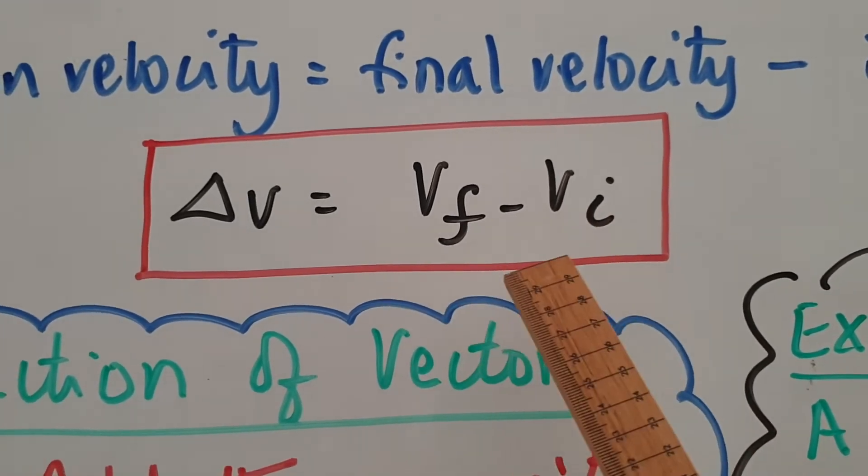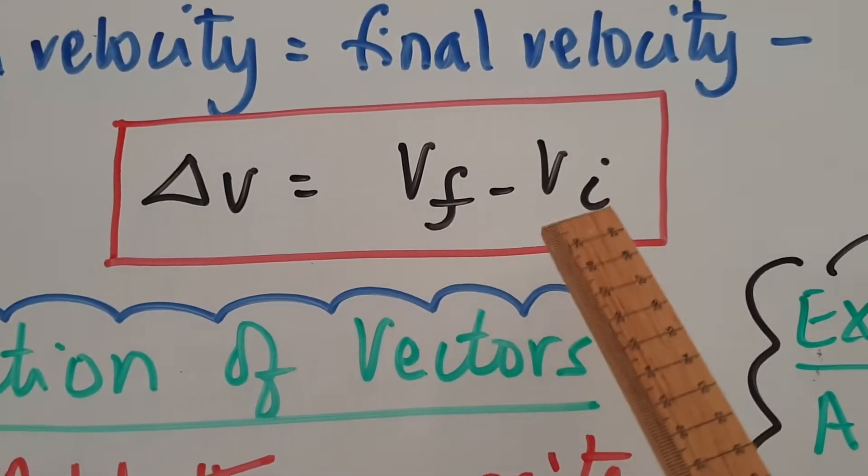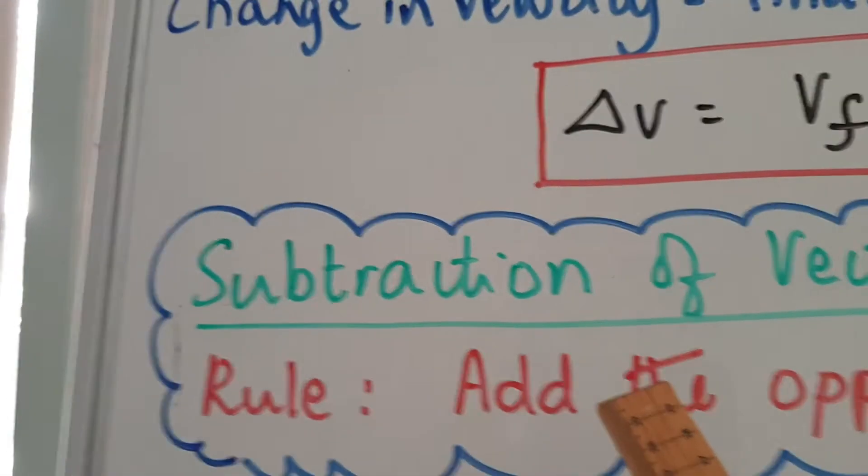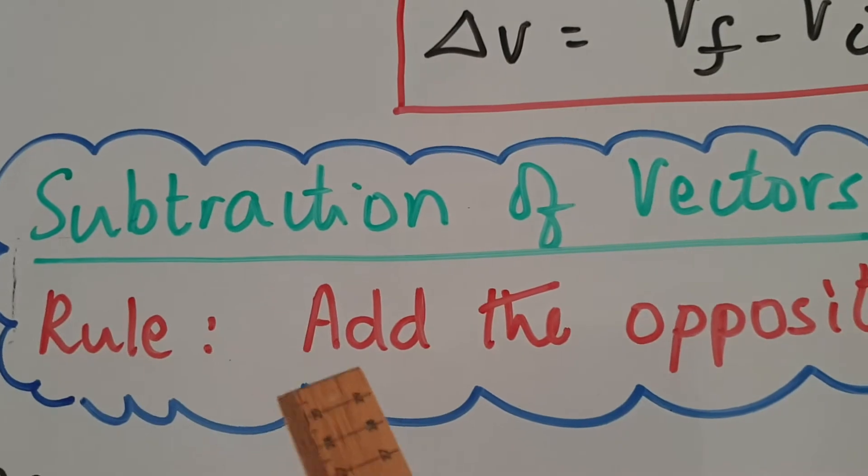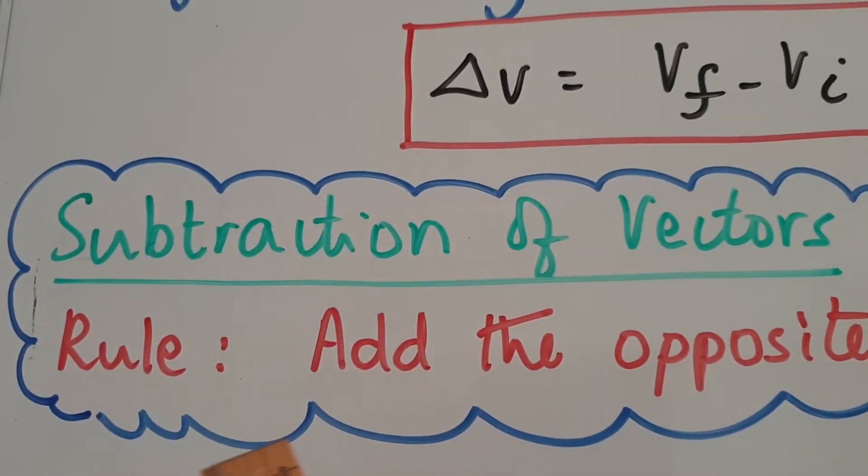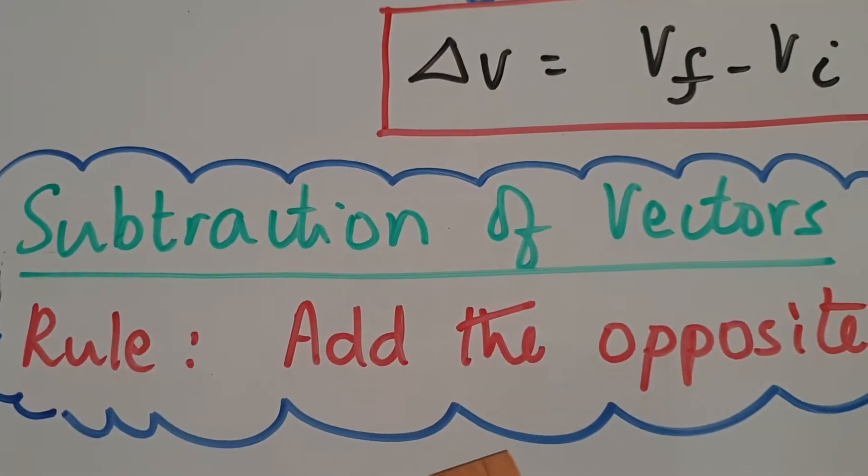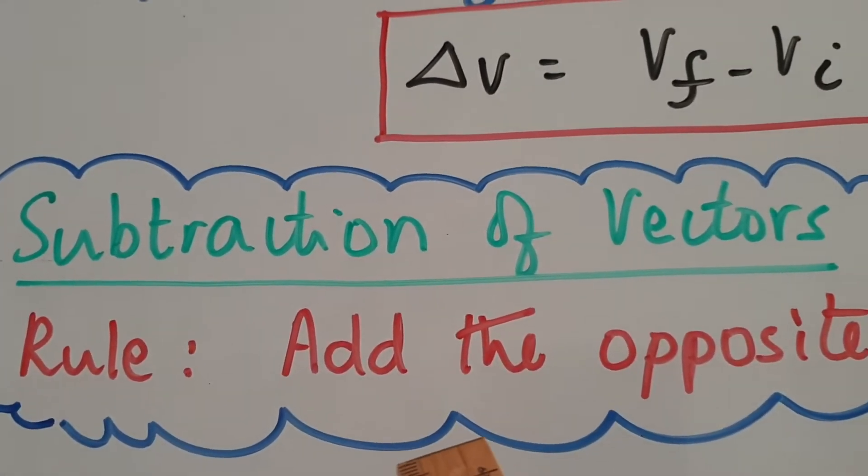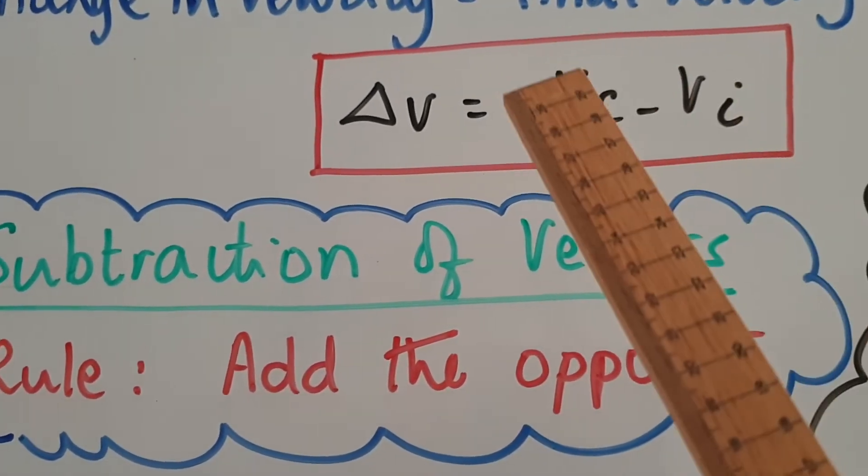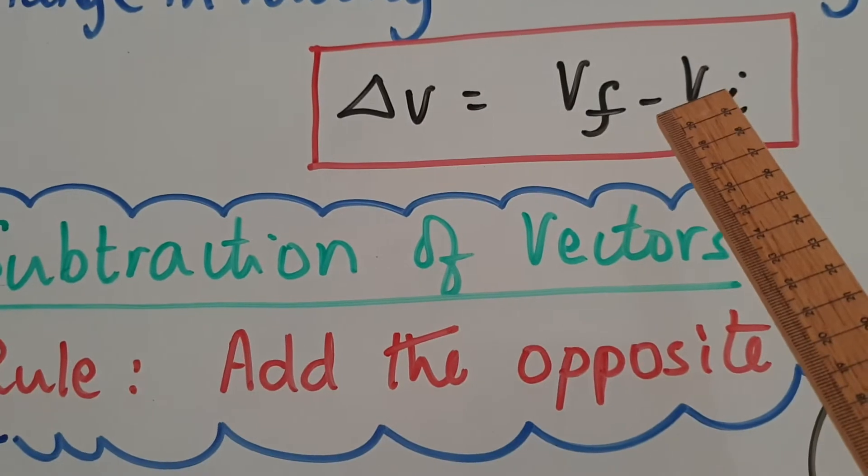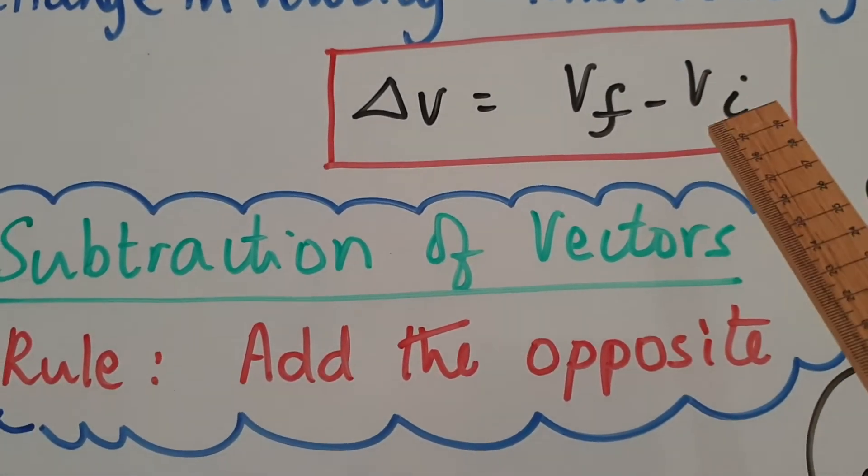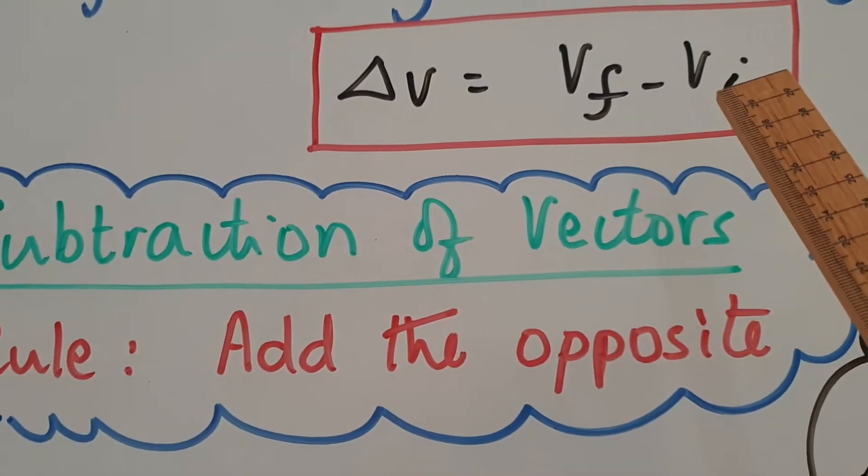Now since velocity is a vector, it's got size as well as direction, we have to use vector subtraction. So how do we use vector subtraction? The rule is just three words: add the opposite. And you might think, oh my goodness, what on earth does it mean? It simply means to whatever number is first, instead of subtracting, you change the subtraction to a plus sign and opposite means opposite direction.